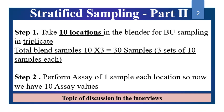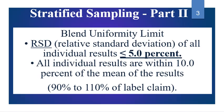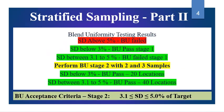Out of 30 blend samples, 10 samples are tested — one assay per location — giving 10 assay values. BU, CU, and Stratified Sampling are core areas of validation and are important topics for interview discussions. The blend uniformity limit requires: RSD of all individual results ≤5%, all individual results within 10% of the mean, and the mean lying between 90–110% of the label claim.